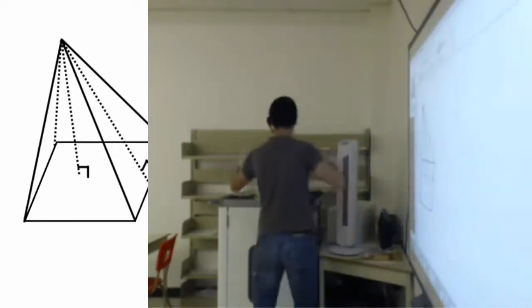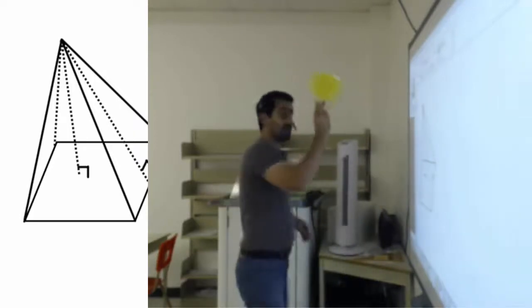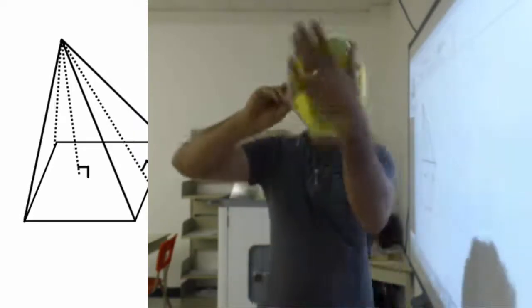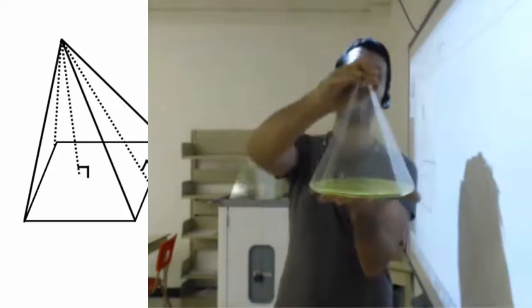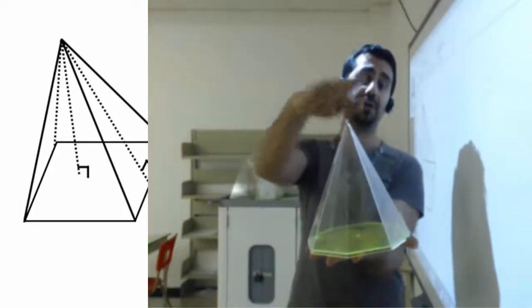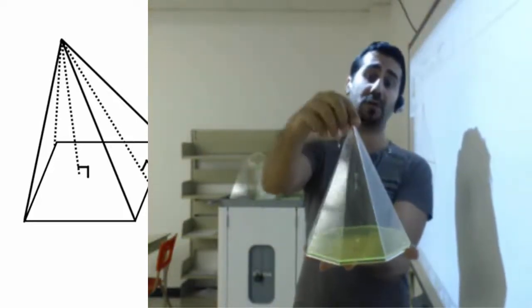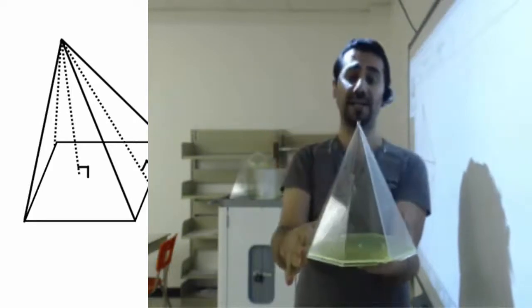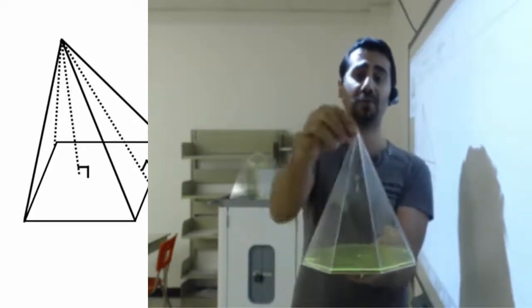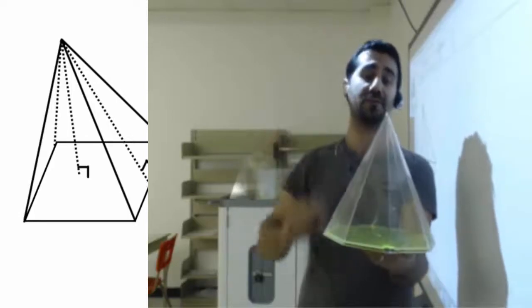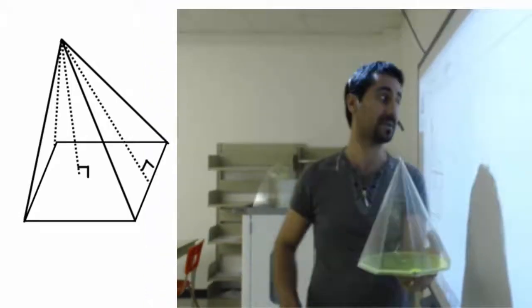Here I have another example. It's a polygon base. So on the top I do not have the polygon, and all the sides, they have the angle. They come together at one point. Therefore, this is called a pyramid.